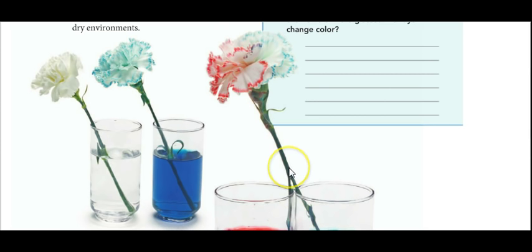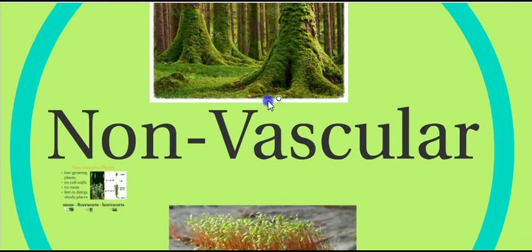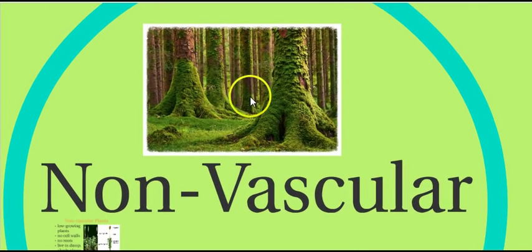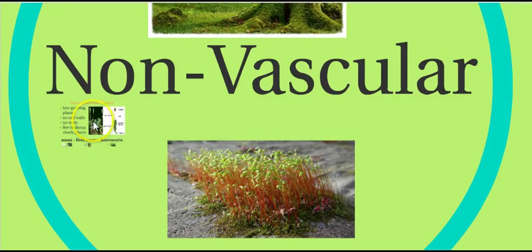That is all a result of vascular tissue. But not all plants have vascular tissue. So let's take a look at some examples of non-vascular plants — plants that do not have vascular tissue. If you look in the photo here, this is moss growing on the ground and up the sides of these trees. Another example shows moss growing on a rock, and it has grown some reproductive structures that we'll talk about in a minute. So moss is an example of a non-vascular plant.